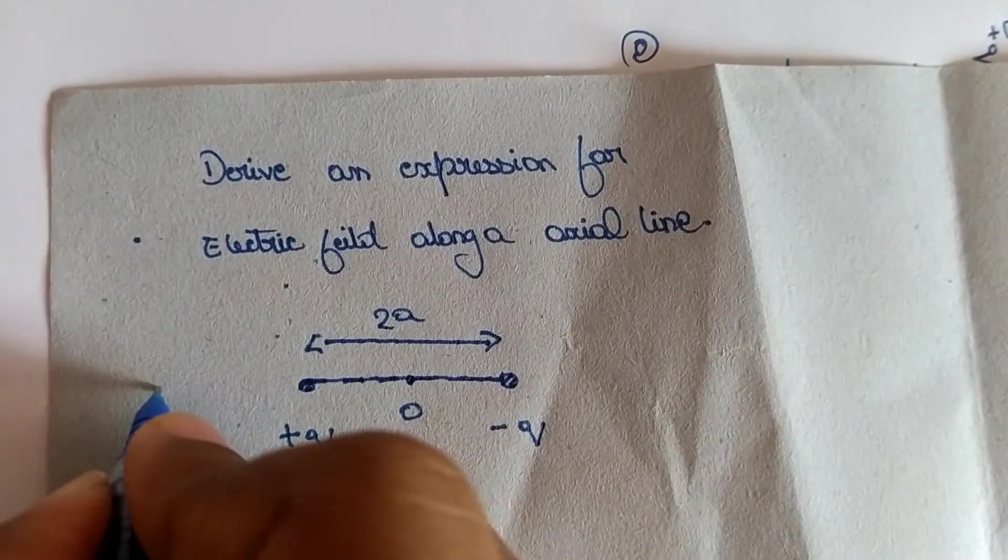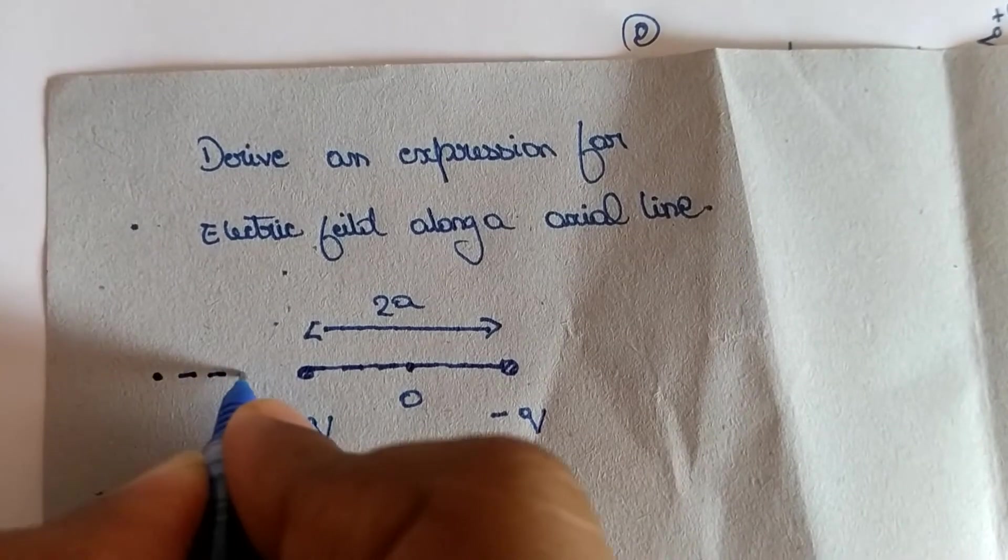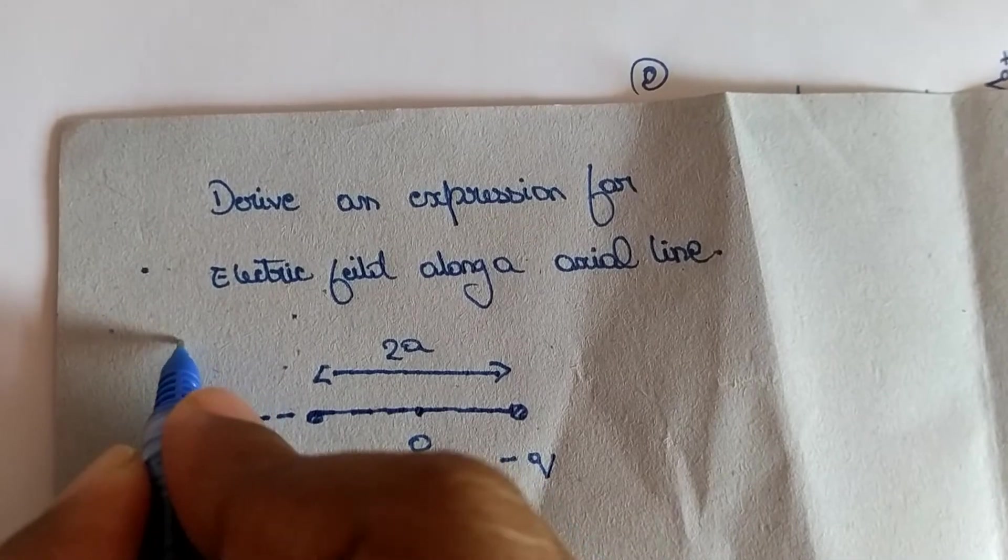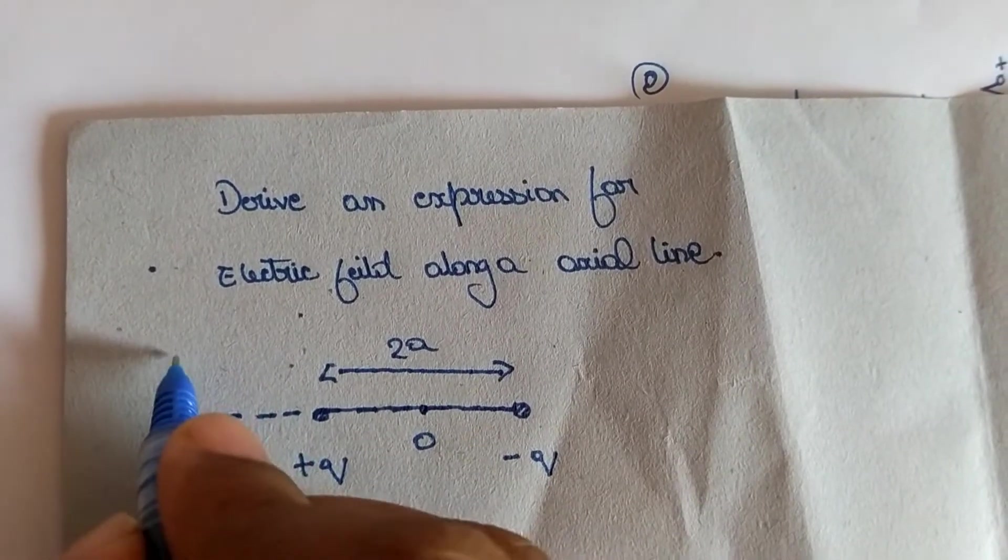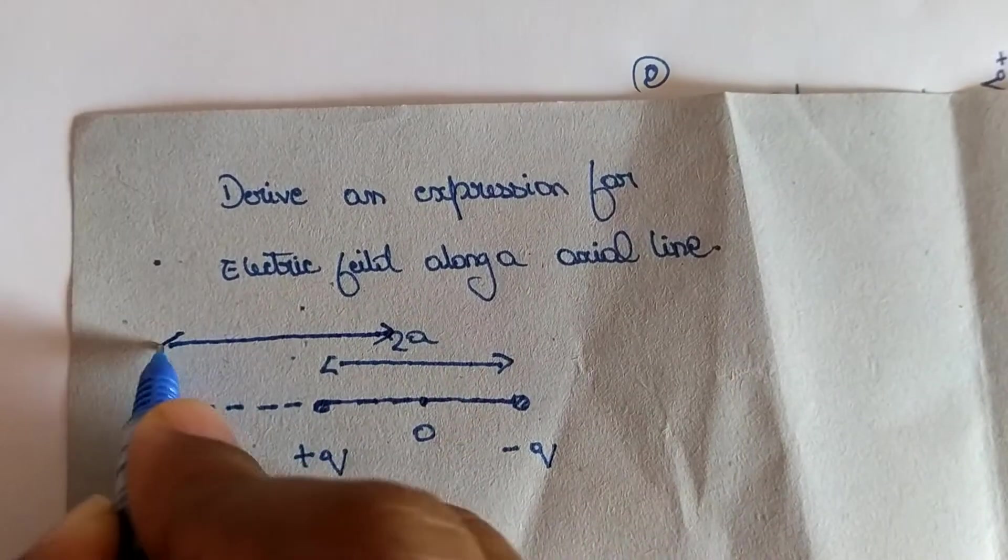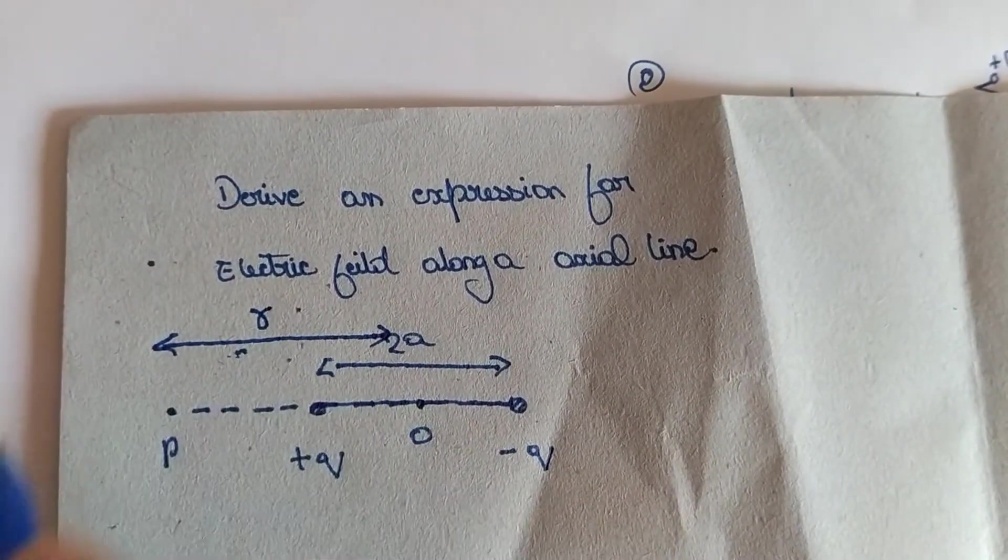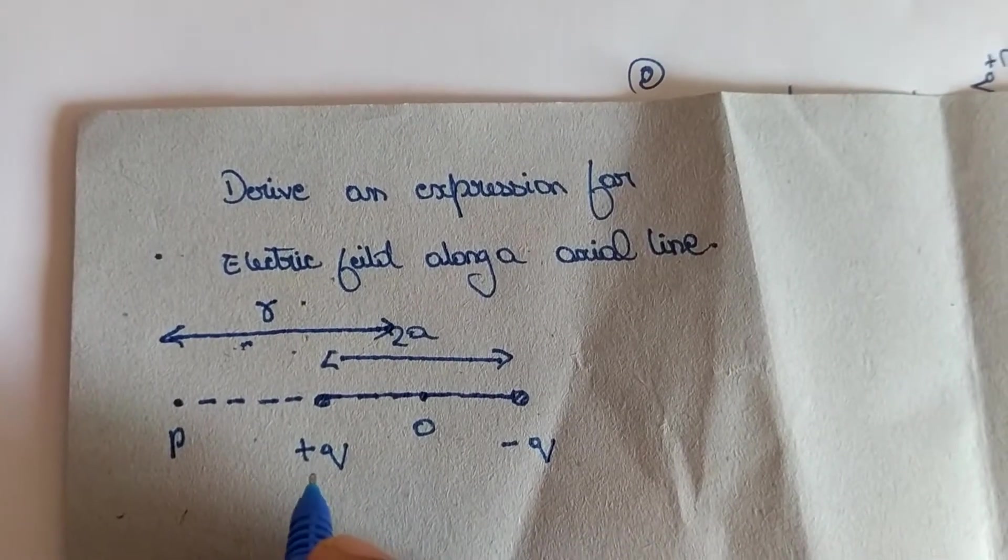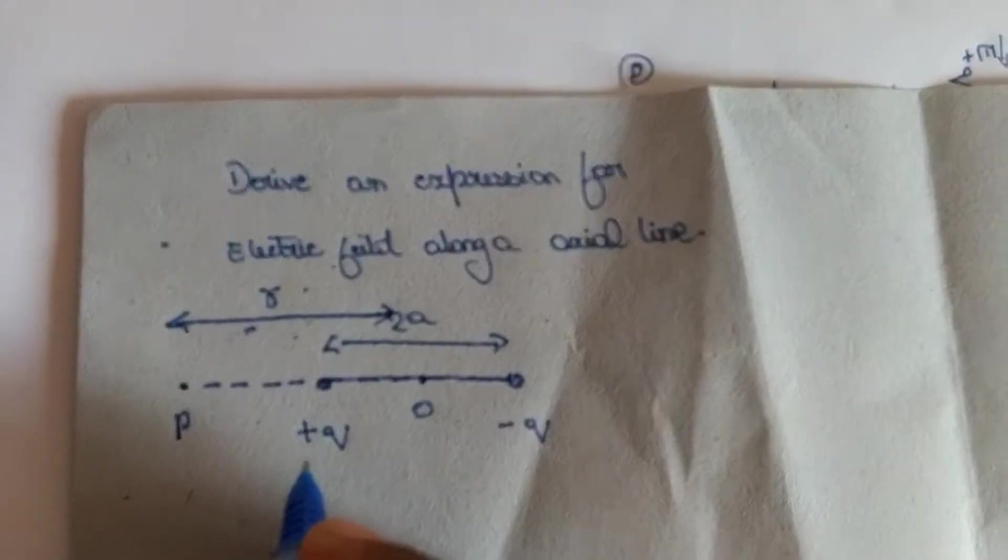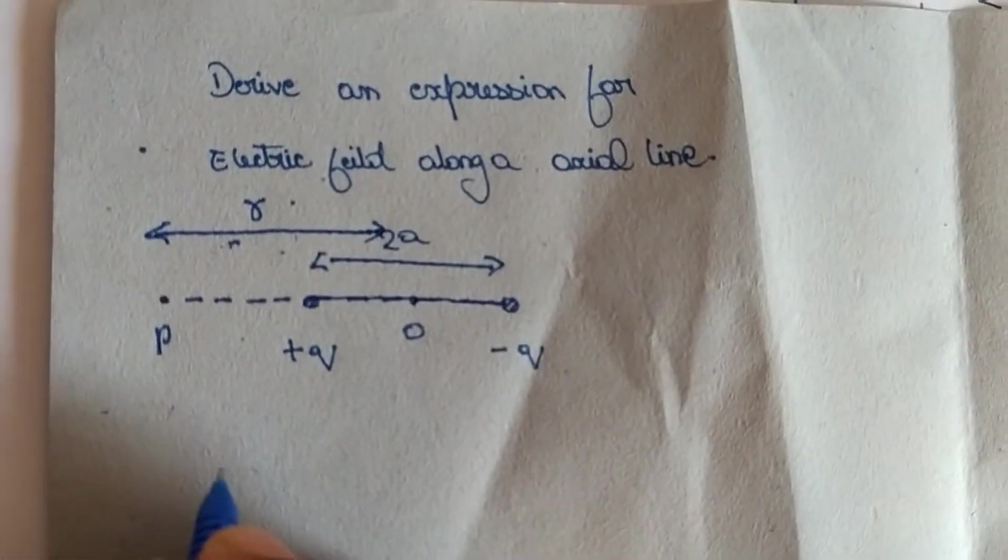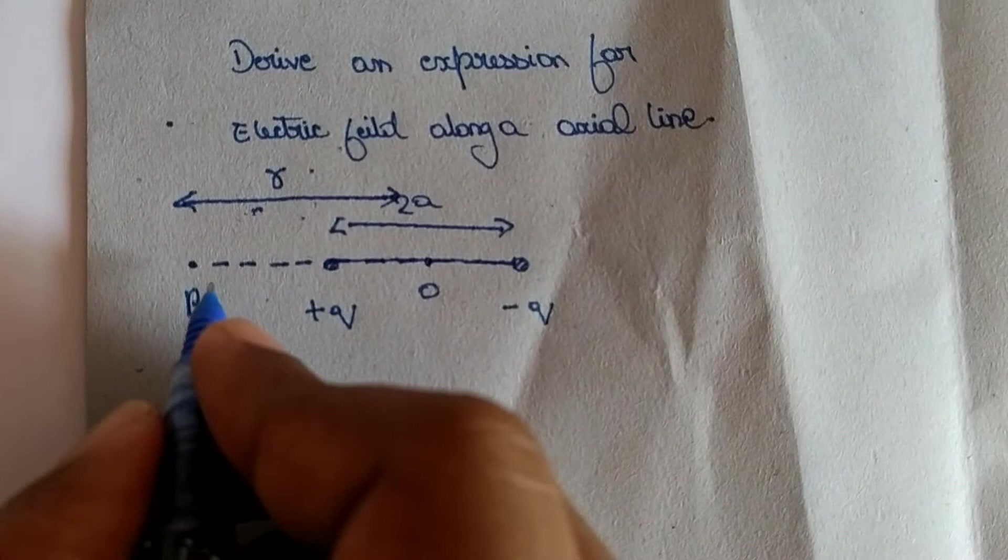Let this distance be 2a. This is the center of the dipole system. Then let us consider some point P along the axial line. The distance between the point P and the center of the dipole system, let us consider this distance as r.